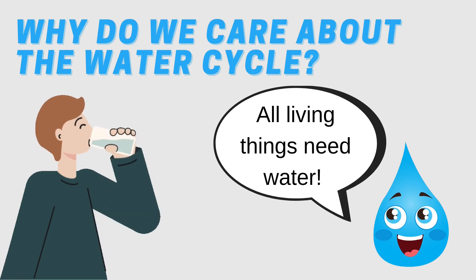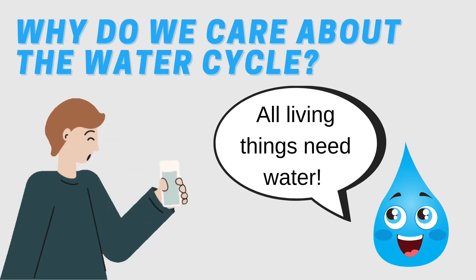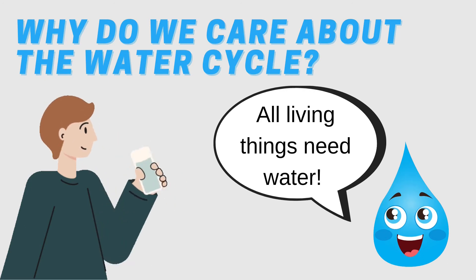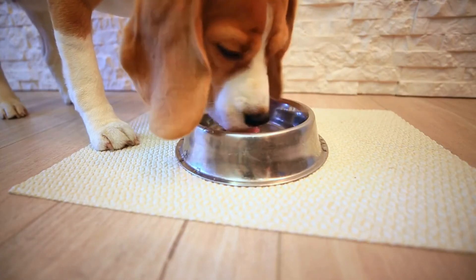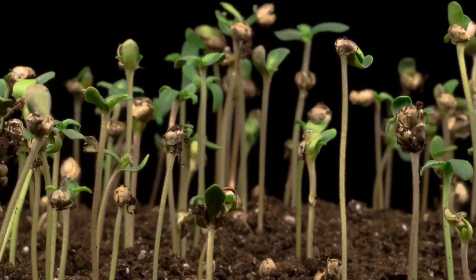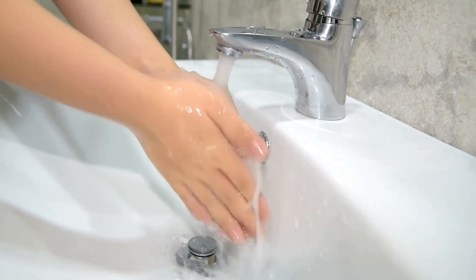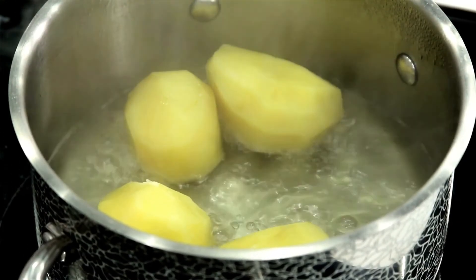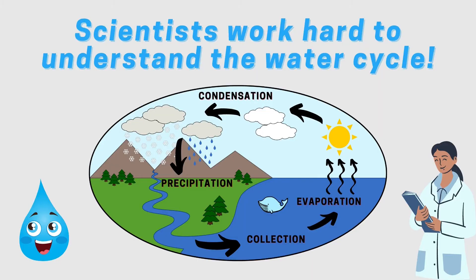You may be wondering, why do we care about the water cycle? Well, the main reason we care is because all living things — from humans, to bugs, to flowers — need water to survive. Humans and animals need water to drink, and plants need water to grow. Us humans also use water for many things in our day to day lives, like washing, cooking, and even fun activities like swimming. This is why it's important that scientists understand how water moves around planet earth through the water cycle.